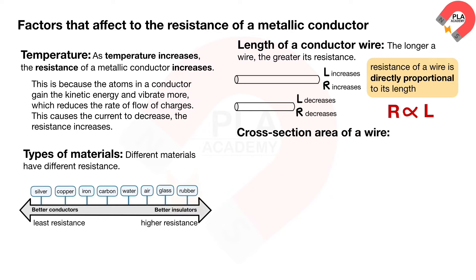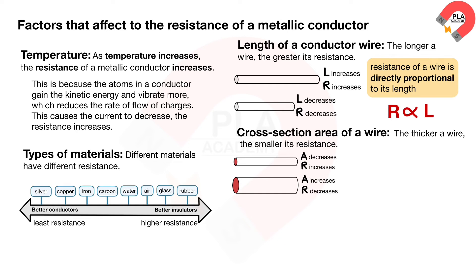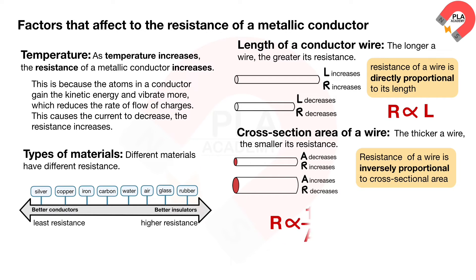Cross-section area of a wire: the thicker a wire, the smaller its resistance. This is because there is more space for electrons, and so more electrons can flow. The resistance of a wire is inversely proportional to its cross-sectional area, width, or thickness. Cross-section area equals pi times radius squared, or pi times diameter squared over 4. So, cross-section area is directly proportional to the square of the radius and the square of the diameter.